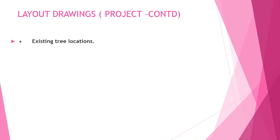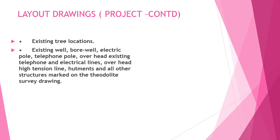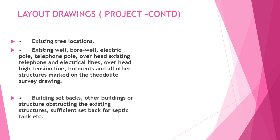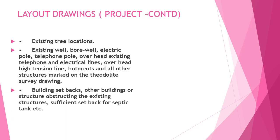Continuing with layout drawings: existing tree locations, existing well, borewell, electrical pole, and other structures — everything has to be marked. Building setbacks and other buildings or structures obstructing the existing structure, as well as sufficient setback for septic tanks etc., should also be indicated.